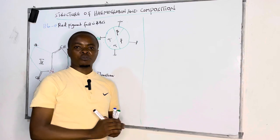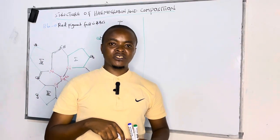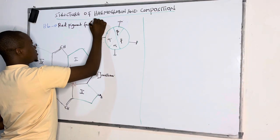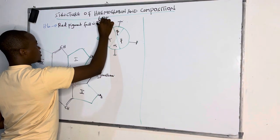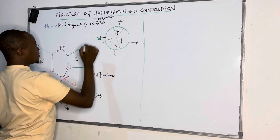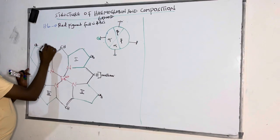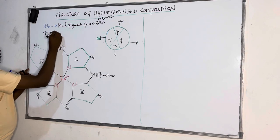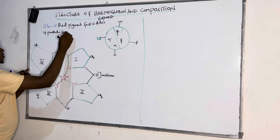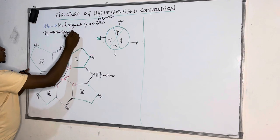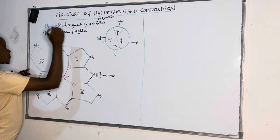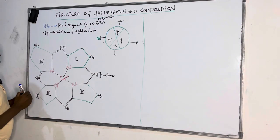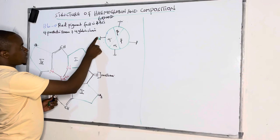Red cells are called red cells due to the presence of hemoglobin. If we want to measure hemoglobin, its molecular weight measures 68,000 daltons. It is composed of four prosthetic heme groups plus four globin chains.